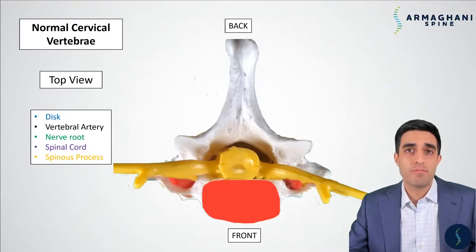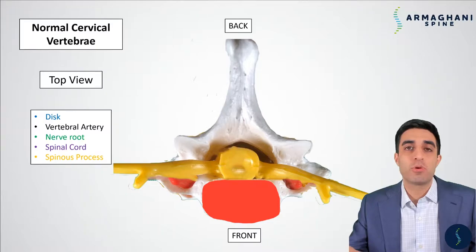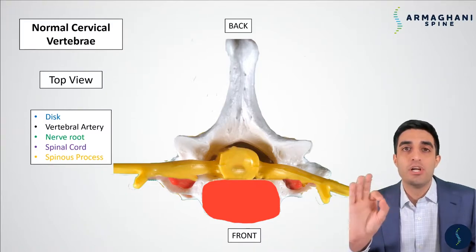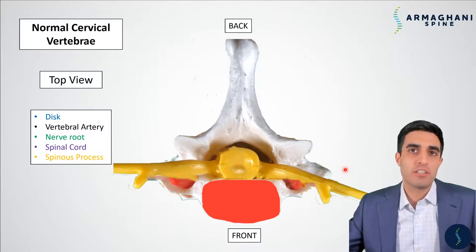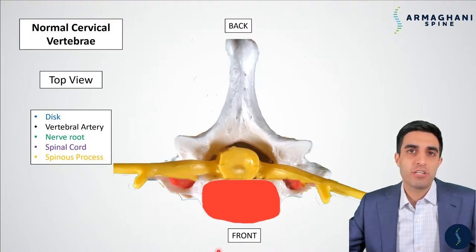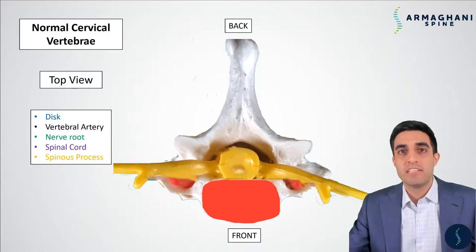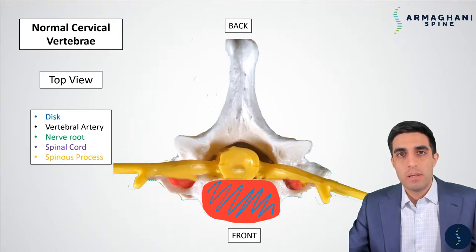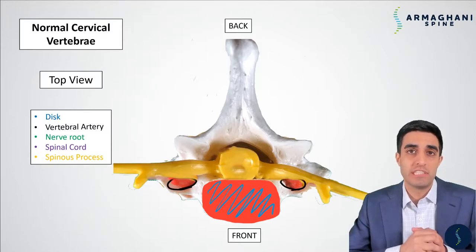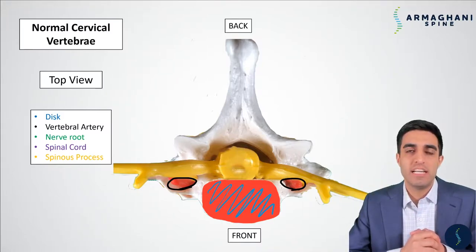Now let's move on to the top view or the cross-section view — as if we cut you right in half through a disc space. The back of your neck is up top and the front of your neck is in the front. Speaking of the disc, it is outlined here in blue — the cushiony material in between two vertebrae. Next, we have the vertebral arteries. We want to know where these are at all times to help prevent any sort of blood vessel injury during surgery. It is very rare that this happens, but we want to be aware of where they are at all times.